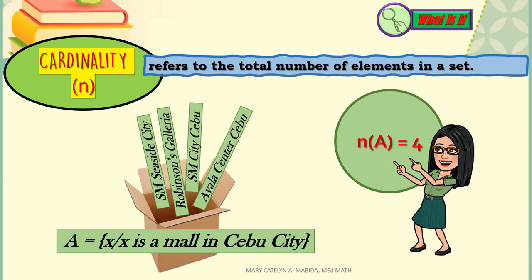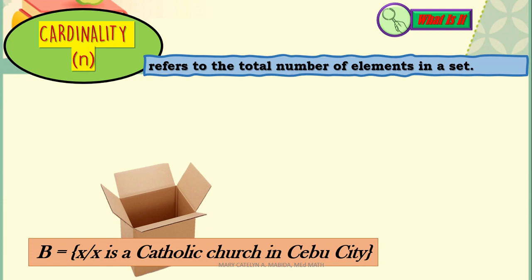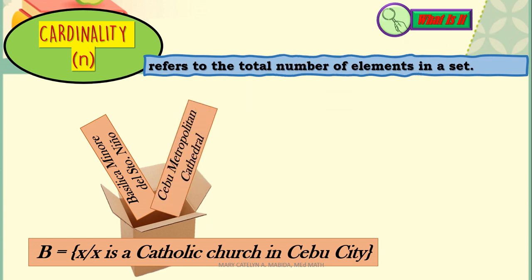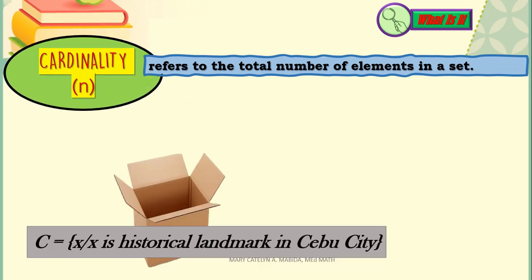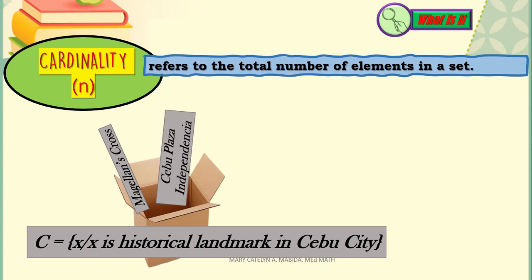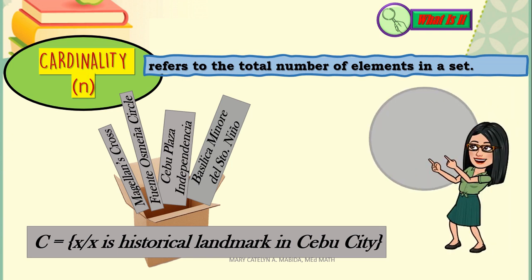For set B — x where x is a Catholic Church in Cebu City — we have Basilica Minore del Santo Niño and Metropolitan Cathedral. There are 2 elements in set B, so the cardinality of set B is 2. For set C — x such that x is a historical landmark in Cebu City — we have Magellan's Cross, Plaza Independencia, Fuente Osmeña Circle, and Basilica Minore del Santo Niño. The cardinality of set C is 4.